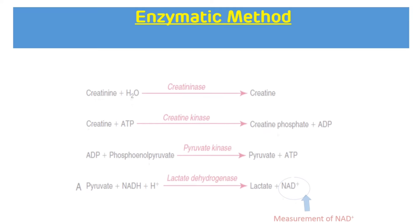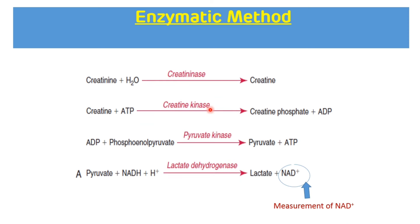Another method available for estimation of serum creatinine is the enzymatic method, which uses enzymes: creatininase, creatine kinase, pyruvate kinase, and lactate dehydrogenase. Creatininase converts creatinine to creatine; creatine kinase converts creatine to creatine phosphate; ADP formed combines with phosphoenolpyruvate and in the presence of pyruvate kinase is converted to pyruvate; lactate dehydrogenase converts pyruvate to lactate with synthesis of NAD+. The concentration of NAD+ is measured. The enzymatic method is more sensitive and specific compared to Jaffe's method.